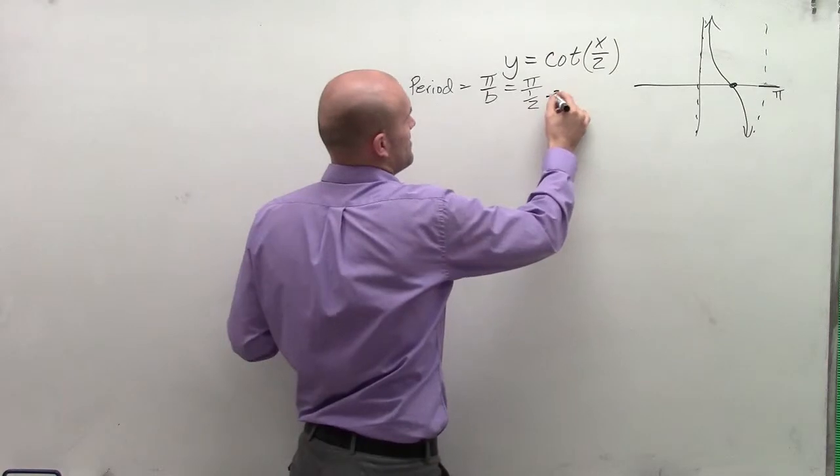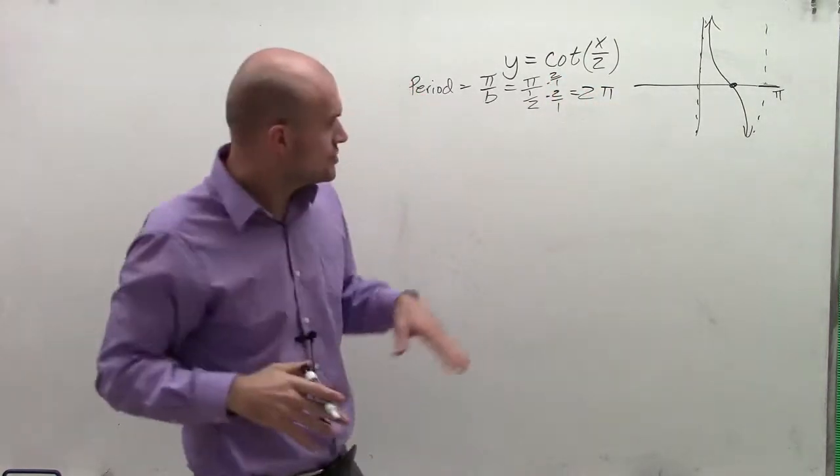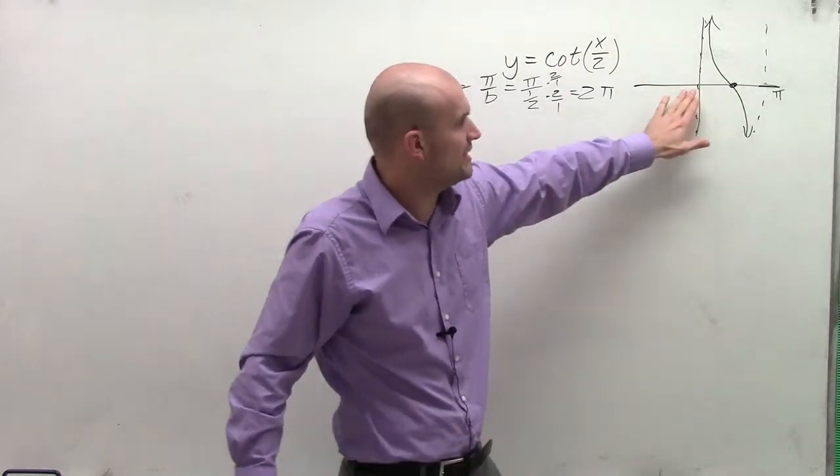Now to simplify that, I multiply by the reciprocal, and I get 2 pi. So therefore, now rather than my period being at pi, my initial period is now going to be at 2 pi.